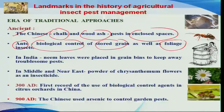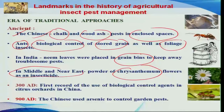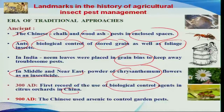Neem is one of the domestic trees in India, and it has been used for many years for the management of various pests, both in stored grain pest management and also in open fields. Similarly, chrysanthemum was used as an insecticide in the middle and near east of Asia. Ant is one of the important predators in managing key pests, and there is a record of use of this biological control agent — the ant — in China during 3000 AD.